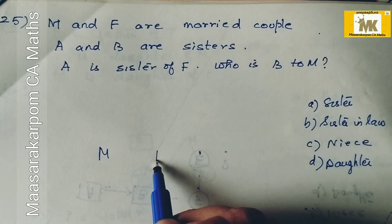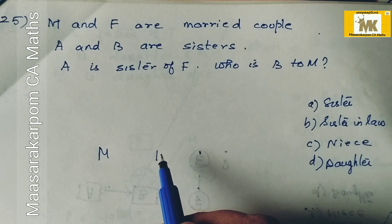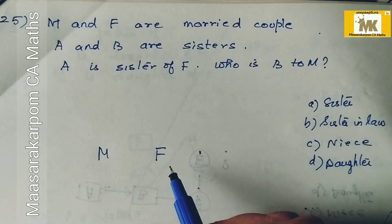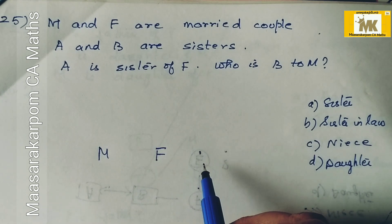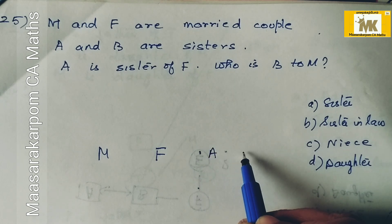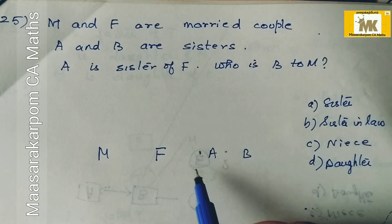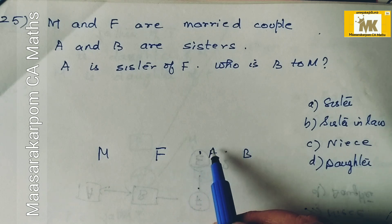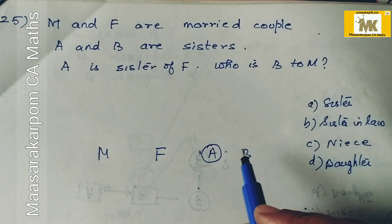M and F are a married couple — husband and wife. A and B are sisters. A is the sister of F.